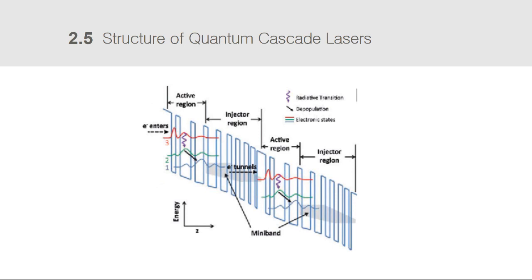Using the principles of finite quantum wells and quantum tunneling, you can understand the principle of QCLs. As shown in the picture, there are dozens of alternating layers of semiconductor material forming quantum energy wells that confine electrons to particular energy states. There are two main repeated regions: active regions and injector regions. As each electron traverses the gain medium, it moves from one quantum well to the next, driven by the voltage applied across the device. At the active region, the electron moves from one energy state to a lower one and emits a photon.